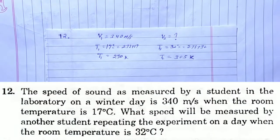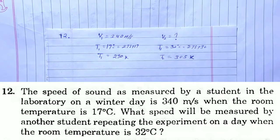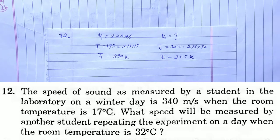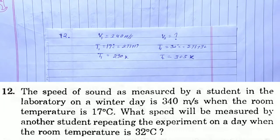H.C. Verma Solution Chapter 16 Sound Wave Question No. 12. The speed of sound is measured by a student in a laboratory on a winter day is 340 meter per second when the room temperature is 17 degree celsius.